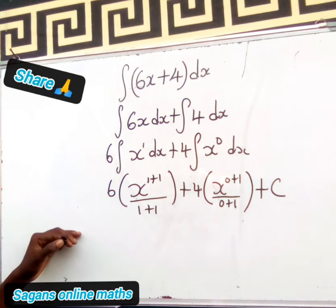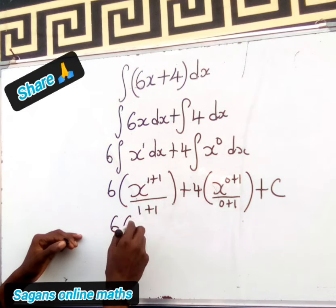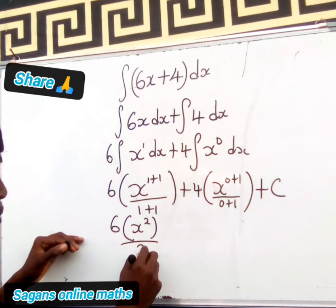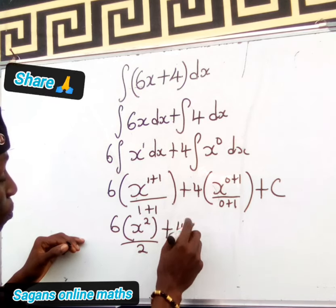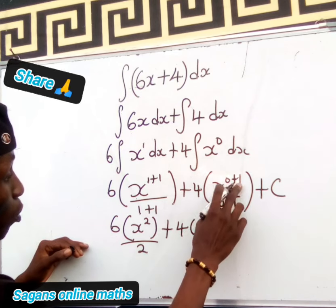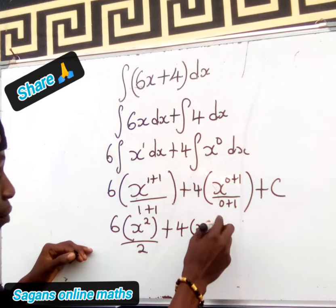Now work on this: 6 times x to the power of 2 divided by 2, because 1 plus 1 is 2. Plus 4 times x, because 0 plus 1 is 1, so x divided by 1 is x, plus the integration constant C.